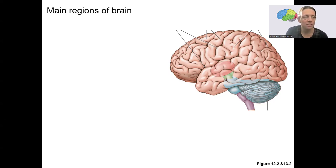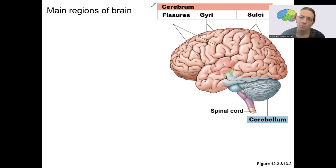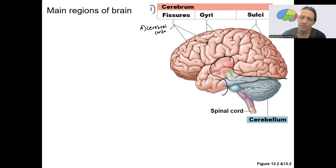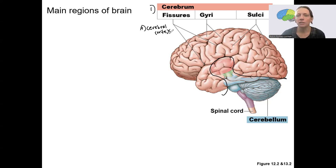The first one is the cerebrum. This is the largest part of the brain — cerebrum is everything kind of above here. The largest part of the cerebrum is the cerebral cortex. Cortex refers to the outside, and that's where all of these fissures, gyri, and sulci are — ridges and grooves that increase the surface area of the brain. So not only is the cerebrum largest in volume, it is even more enhanced in terms of surface area because of these grooves and fissures.